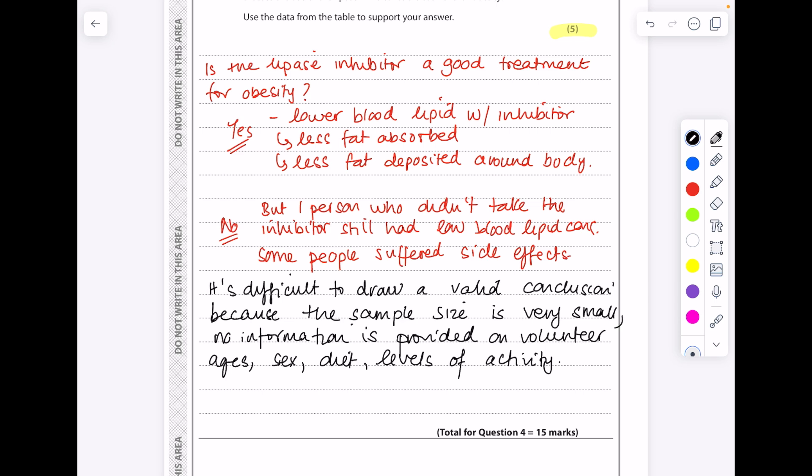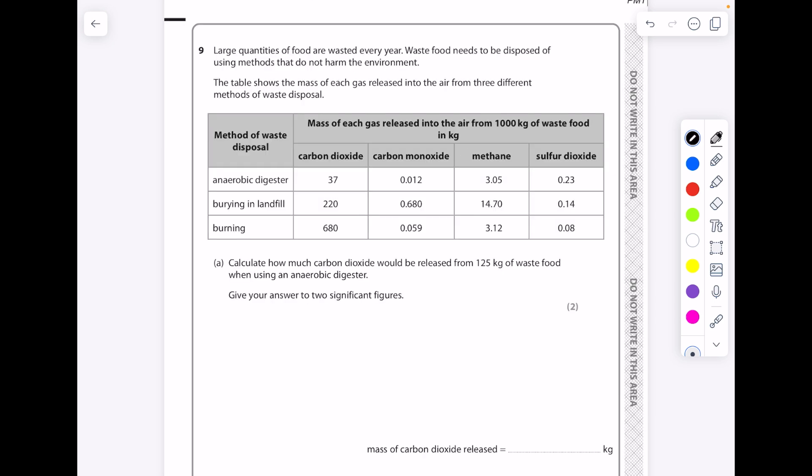Now let's look at another example. Large quantities of food are wasted every year. Waste food needs to be disposed of using methods that do not harm the environment. The table shows the mass of each gas released into the air from three different methods of waste disposal. We have an anaerobic digester so one which doesn't use oxygen, we've got burying in landfill, and we have burning. Let's pick through some of this data.